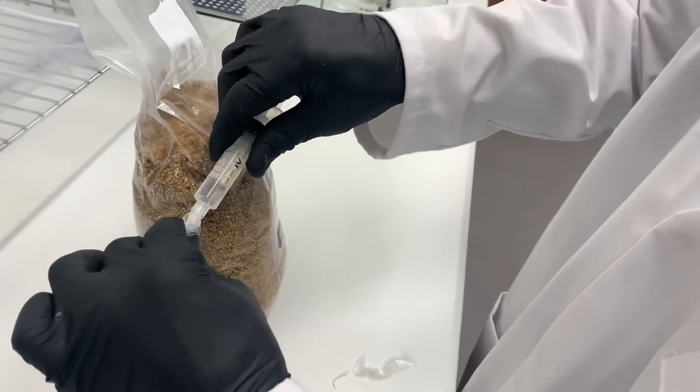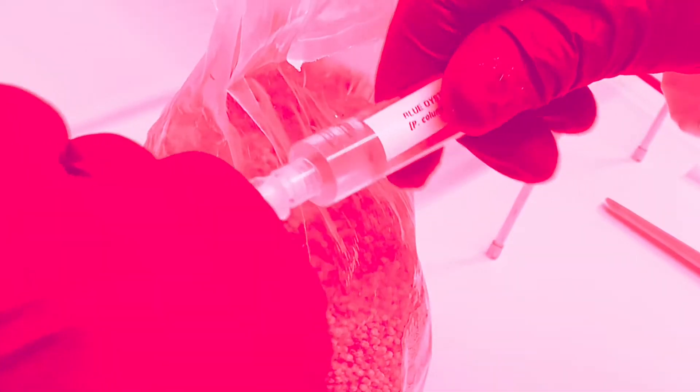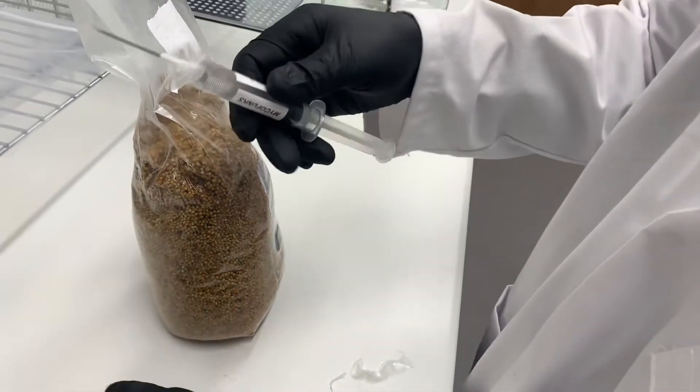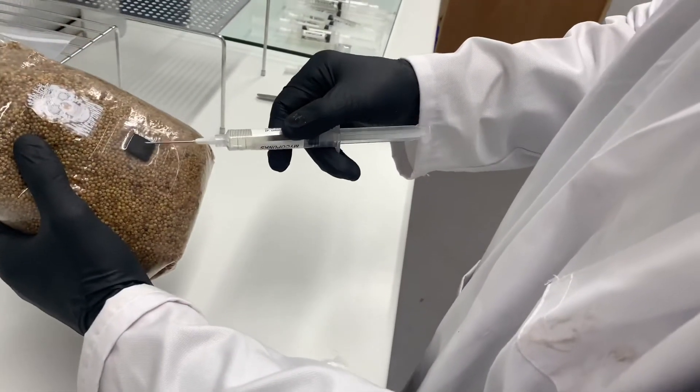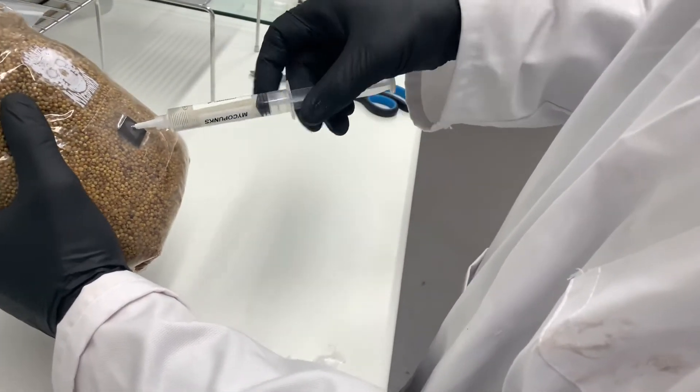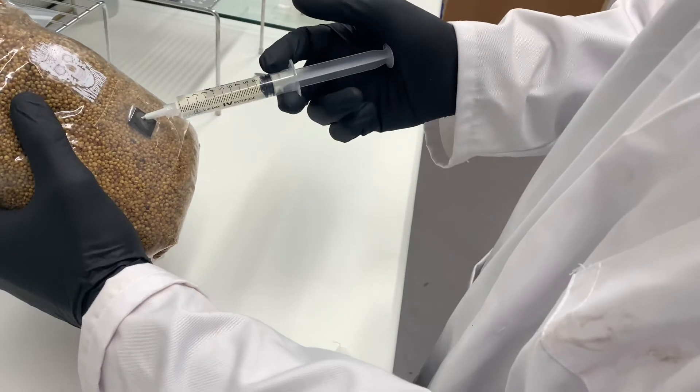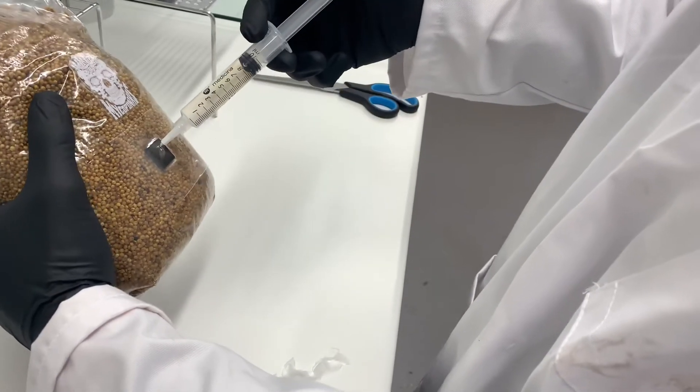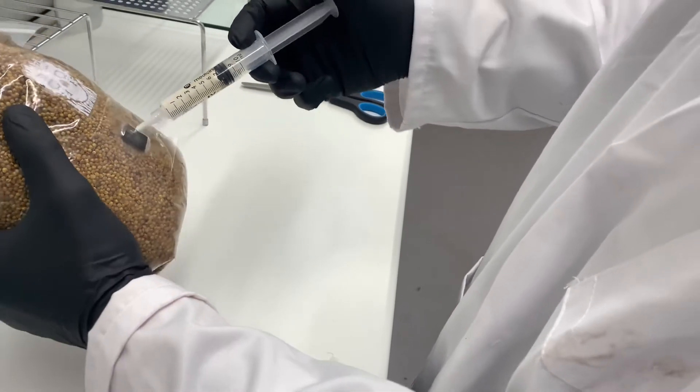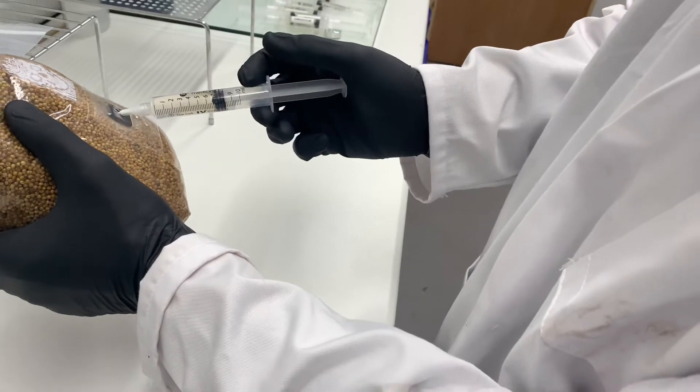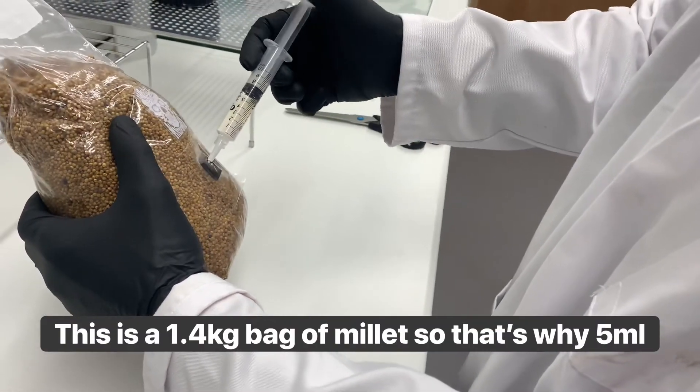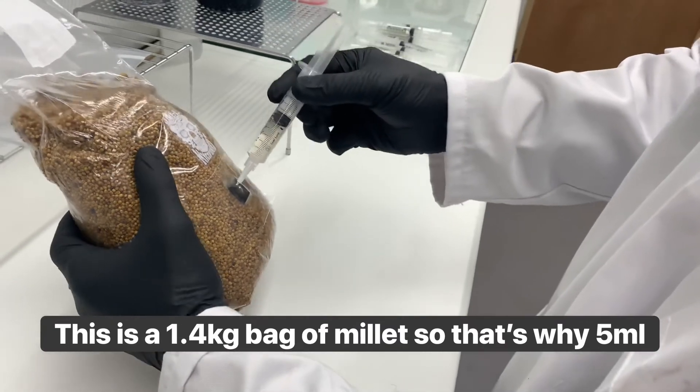Now watch out taking this off because Anthony takes it off like a right madman. He almost stabbed his finger, which would have been ace for the video. There we go, right. So we're going to put five CCs in and we're going to just put it in around the bag, make sure there's lots of points of inoculation. So you really, between two and five milliliters of liquid culture is fine.